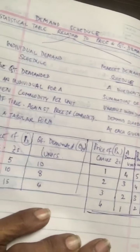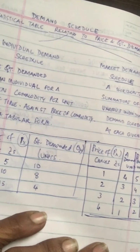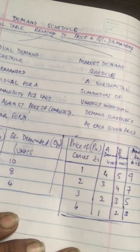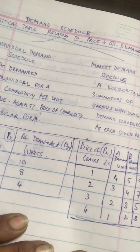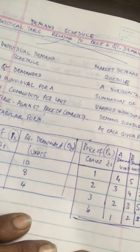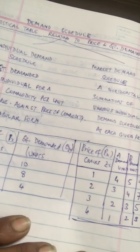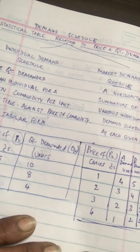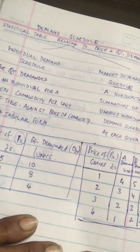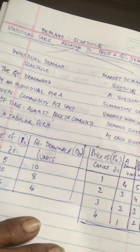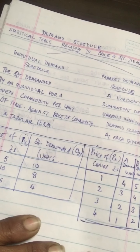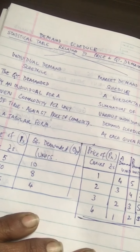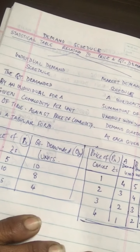Now let's look at the market demand schedule using the example of chalk. The prices given are 1 rupee, 2 rupee, 3 rupee, and 4 rupee. Consumer A's demand for chalk at 1 rupee is 4 units. When the price increases to 2, A's demand falls to 3. When the price increases to 3, A's demand falls from 3 to 2. And when the price increases to 4, A's demand falls from 2 to 1.